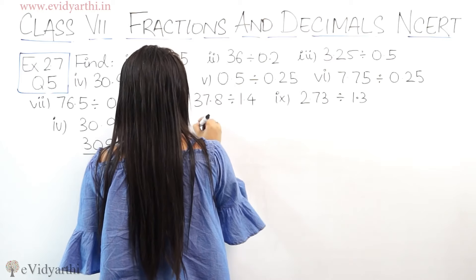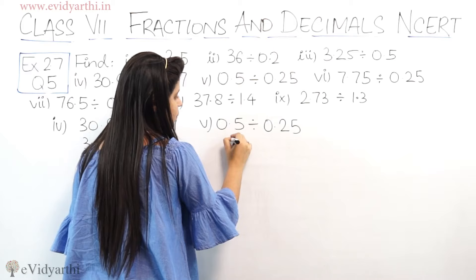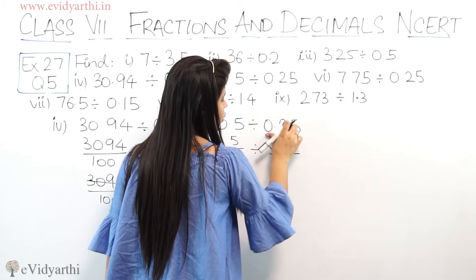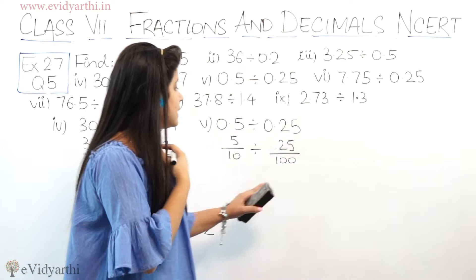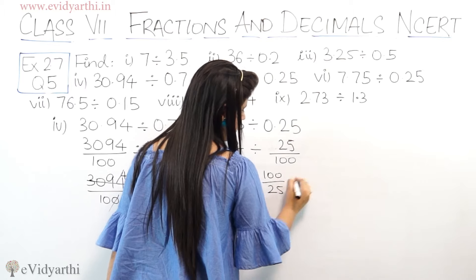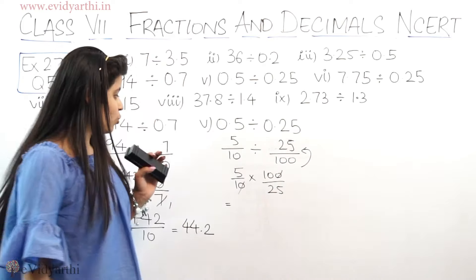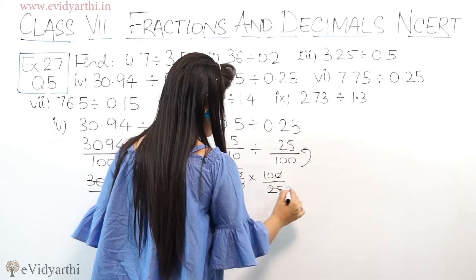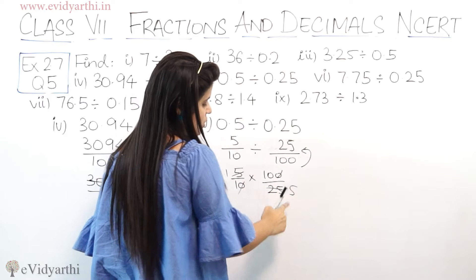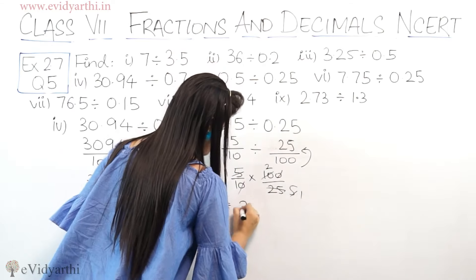Now the fifth part: 0.5 divided by 0.25. 0.5 can be written as 5 upon 10 — decimal के बाद 1 digit. Divided by 25 upon 100 — 2 digits in decimal के बाद, तो 100 आ गया. So this is 5 upon 10 multiplied by 100 upon 25 (reciprocal). 0 से 0 cut हो सकता है. 5 और 25 cut हो सकते हैं — 5 times 5 is 25. Then 5 and 10 also cut — 5 times 2 is 10. So the answer is 2.